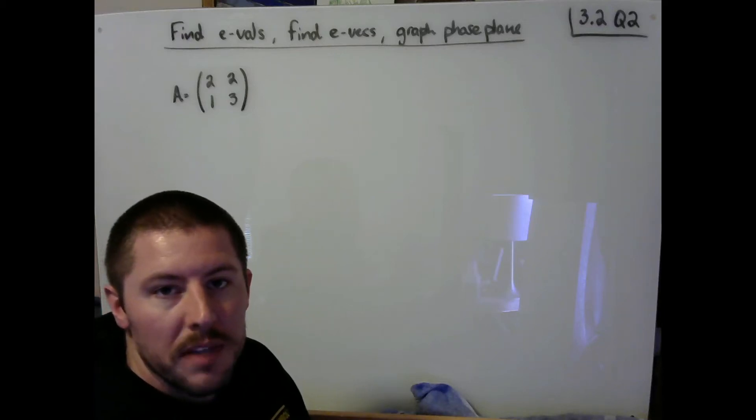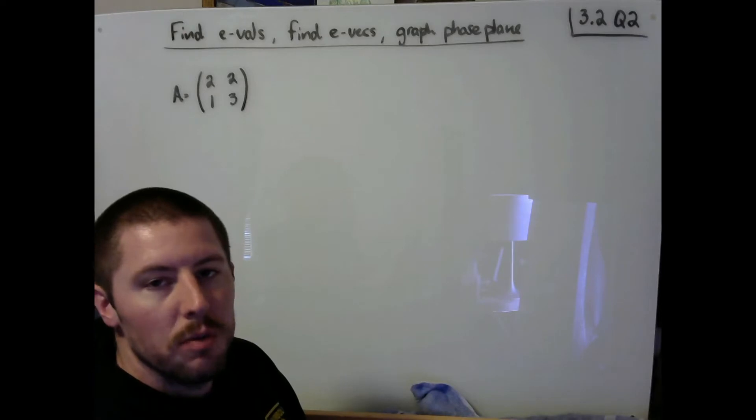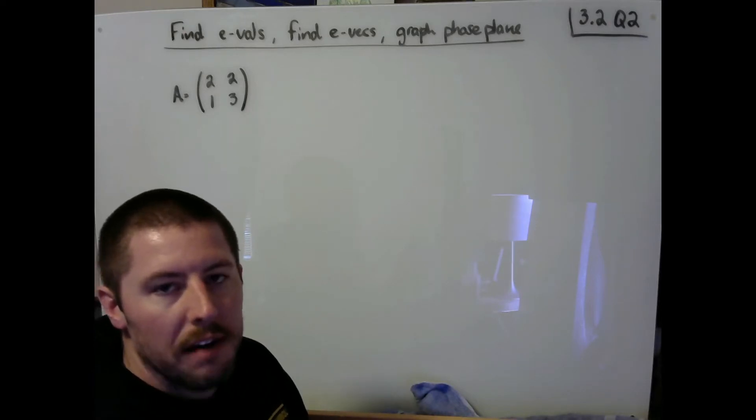Let's take a look at Q2 from section 3.2. In this example, we've been given a coefficient matrix A. We'd like to find its eigenvalues, its eigenvectors, and use those two pieces of information to try and sketch a graph of its phase plane.